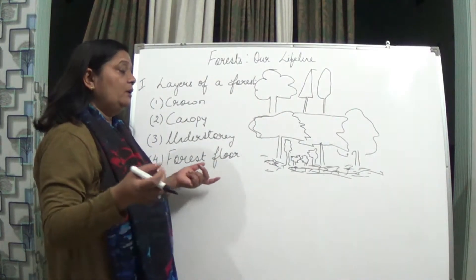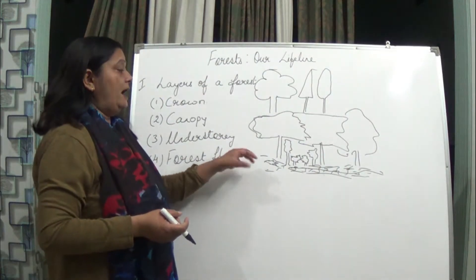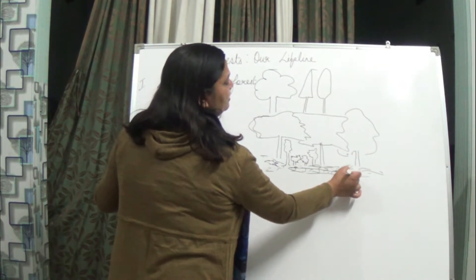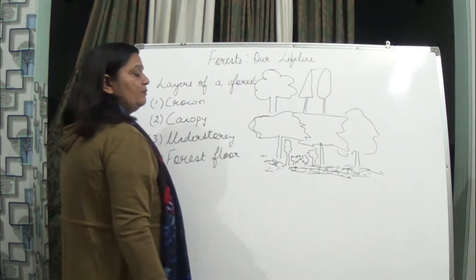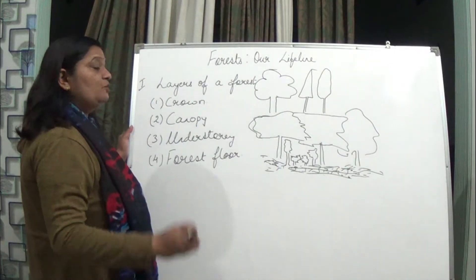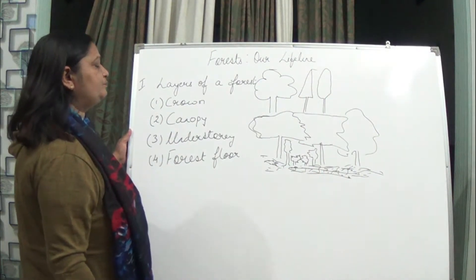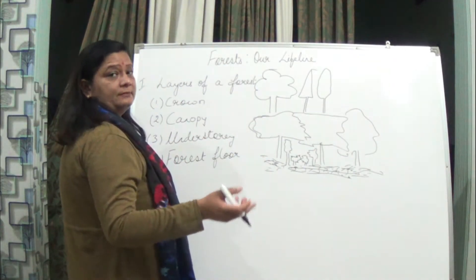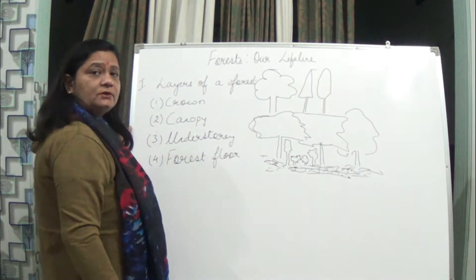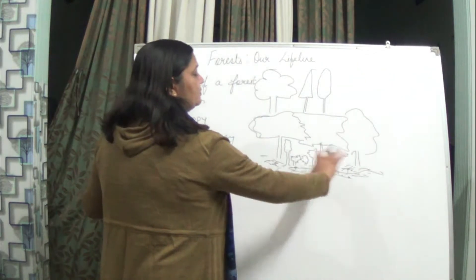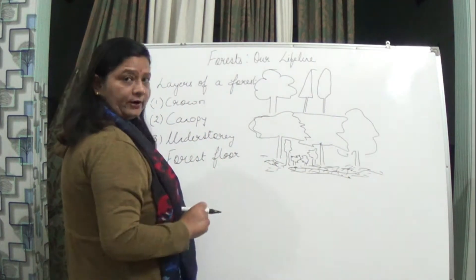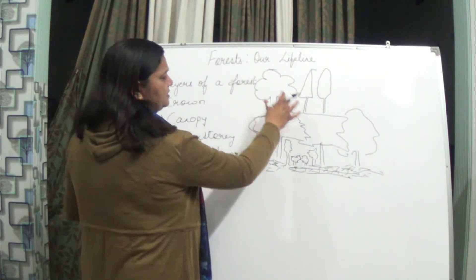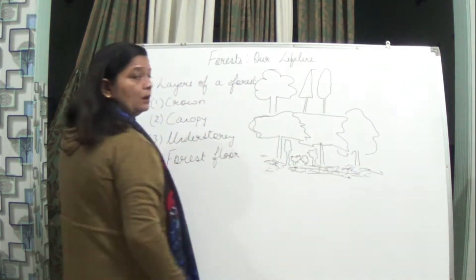Some animals and some microorganisms are present on the forest floor. As a result, this forest floor is totally covered by dead and decaying leaves, dried leaves, microorganisms, small animals, small insects — like centipedes and millipedes — they are all present on the forest floor and cover the soil of the forest. This is how the layers are differentiated.